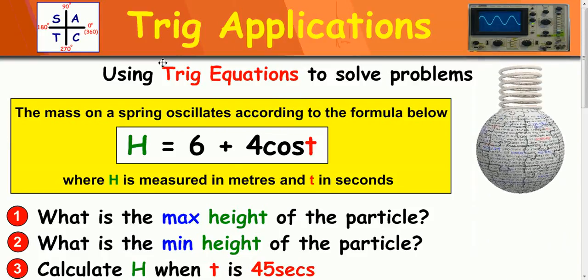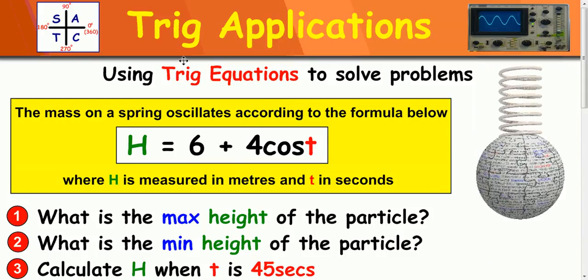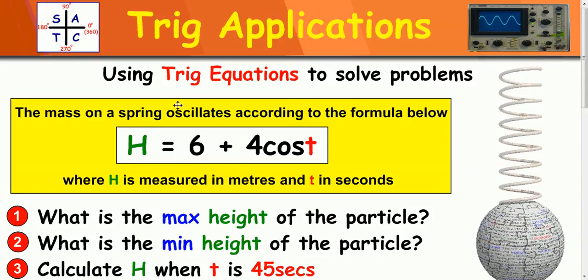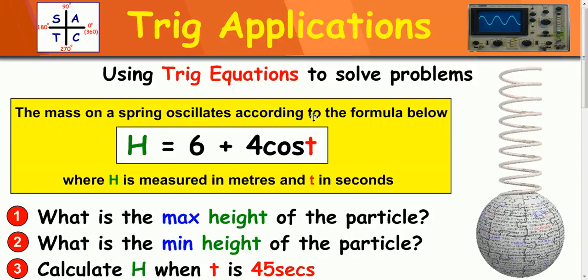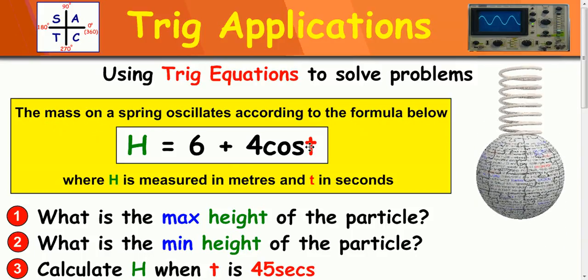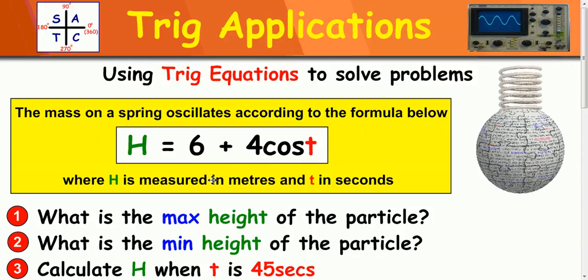In the next example, we're going to look back to intermediate 2 or national 5 trig applications before we go on to higher ones. So in this first example, the mass of a spring oscillates according to the formula here: h equals 6 plus 4 cos t, where h is metres and t is in seconds.